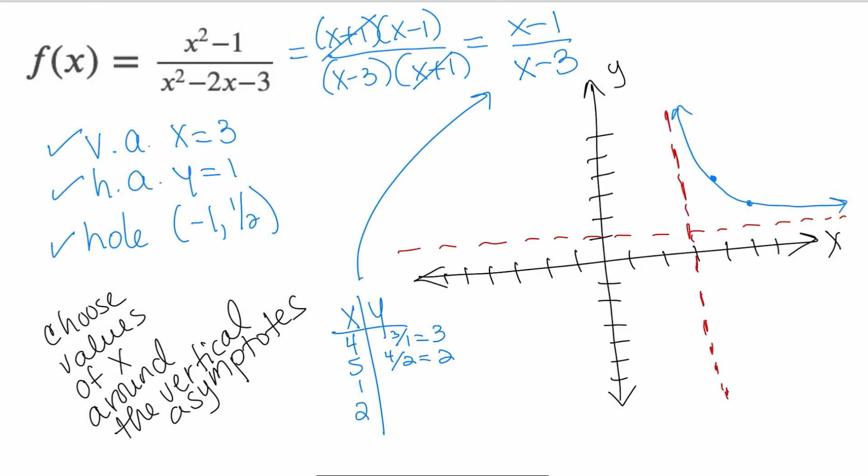Let's see what happens on the left-hand side. If I substitute 1, 1 - 1 is 0. 1 - 3 is -2, but zero divided by any number is zero.